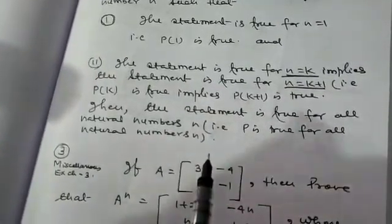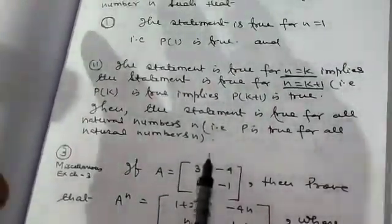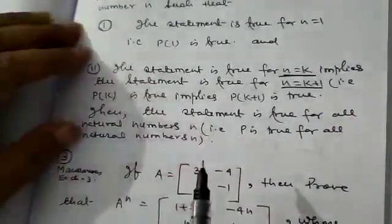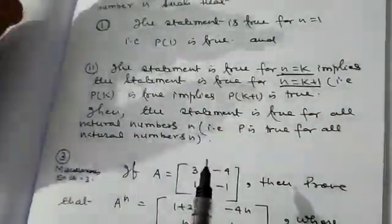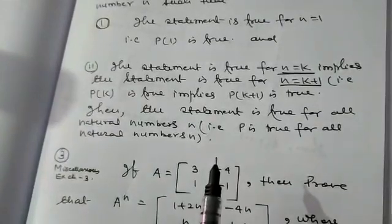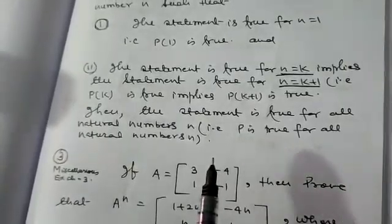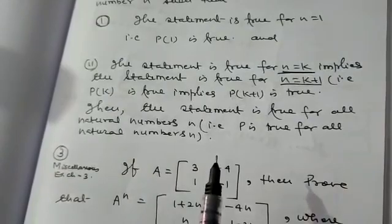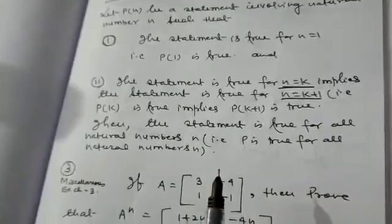I want to recall it again. First, prove it for N equal to 1, where N is a natural number. Then, whatever result you have to prove, consider it is true for N equal to K or N equal to M. Then, using the result from step 2, prove it for N equal to K plus 1 in step 3. In this way, you can solve any problem involving the principle of mathematical induction.